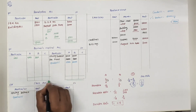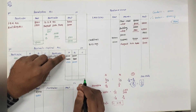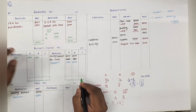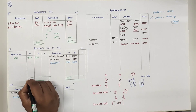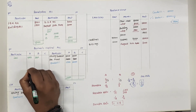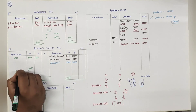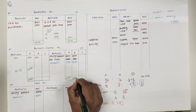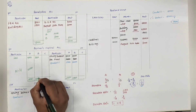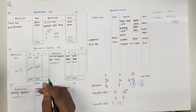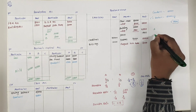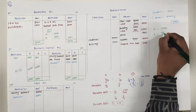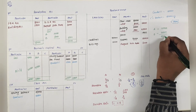A and B का total लगाना है. A का total: 80+14 = 94, plus 15 = 1,09,000, minus 4,000 = 1,05,000 balance carry forward. B का: 40+30 = 70, plus 7 = 77,000, minus 2,000 = 75,000. दोनों का मिला के हुआ 1,80,000 - total A and B का capital.